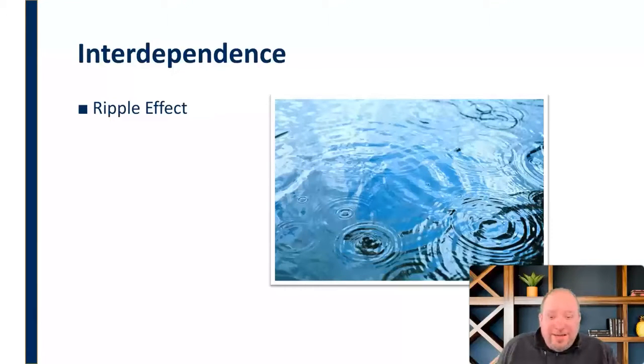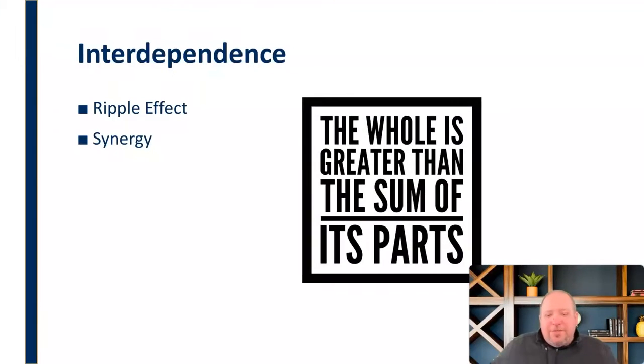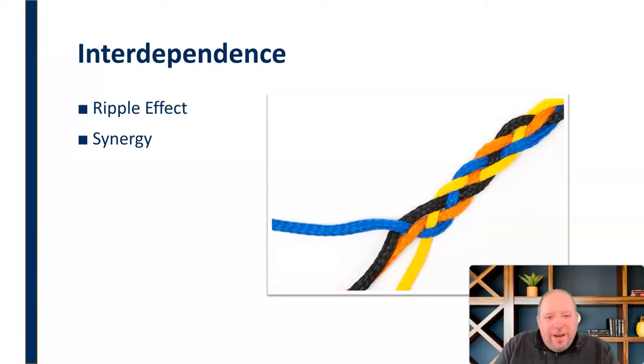Interdependence really has an impact on what we call synergy. This idea that the whole is greater than the sum of the parts. Two plus two doesn't always equal four. Sometimes when you have synergy at work, two plus two equals five. It's the reason we braid rope. When we find threads that are braided, they become exponentially stronger together.